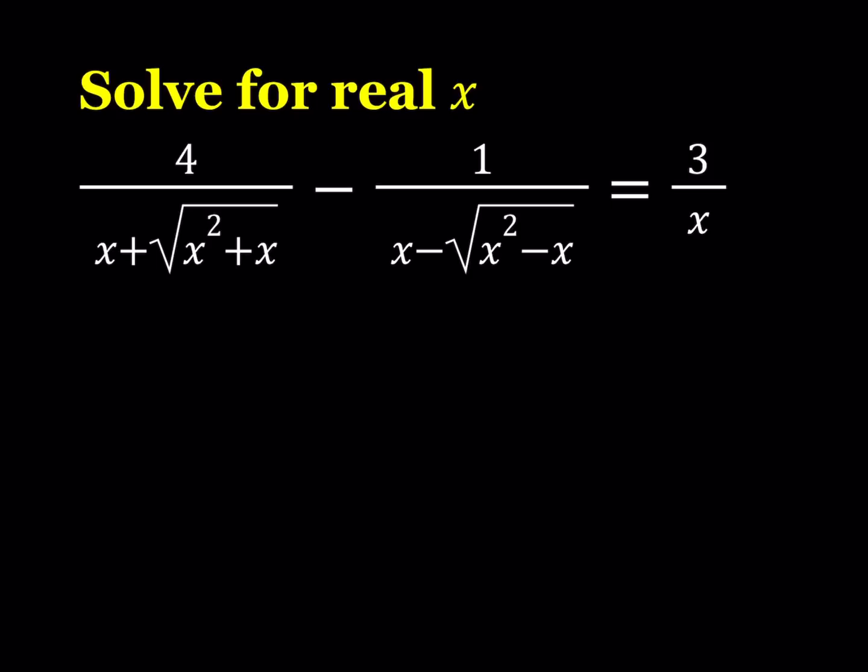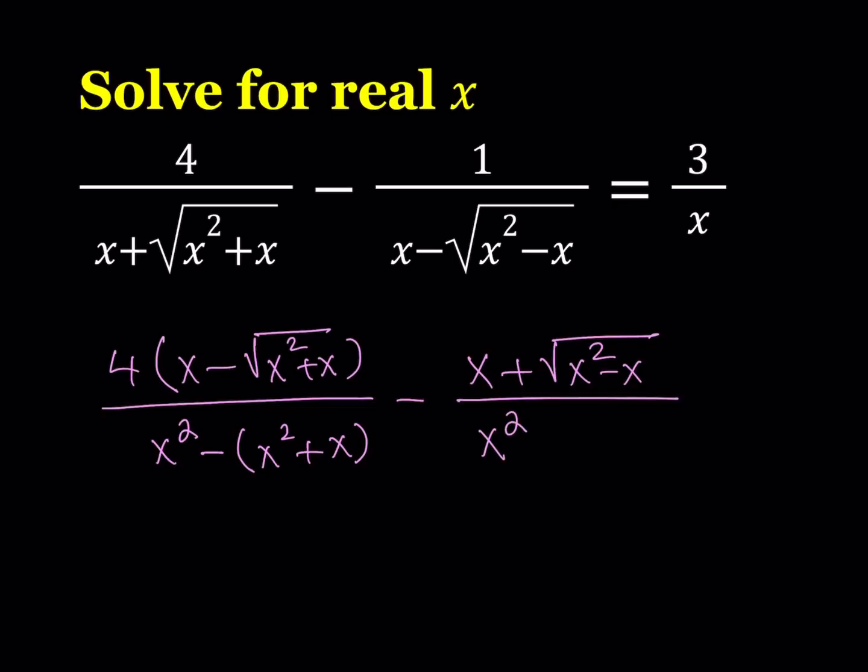Let's go ahead and do that. I'm going to multiply the first one by the conjugate of the denominator, and that is x minus the square root of x squared plus x. The bottom is going to be from difference of two squares, x squared minus the quantity x squared plus x. The second expression will be multiplied by the conjugate of the denominator. Since the numerator is 1, I can just write that and multiply by the conjugate, which gives me from difference of two squares, x squared minus the quantity x squared minus x. And this is equal to 3 over x.